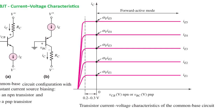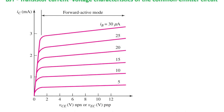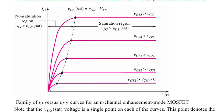In a BJT, the base current activates the device and allows current to flow from collector to emitter. This relies on both electrons and holes, which is why it's called a bipolar device. But remember, to keep a BJT on, you must continuously supply base current.